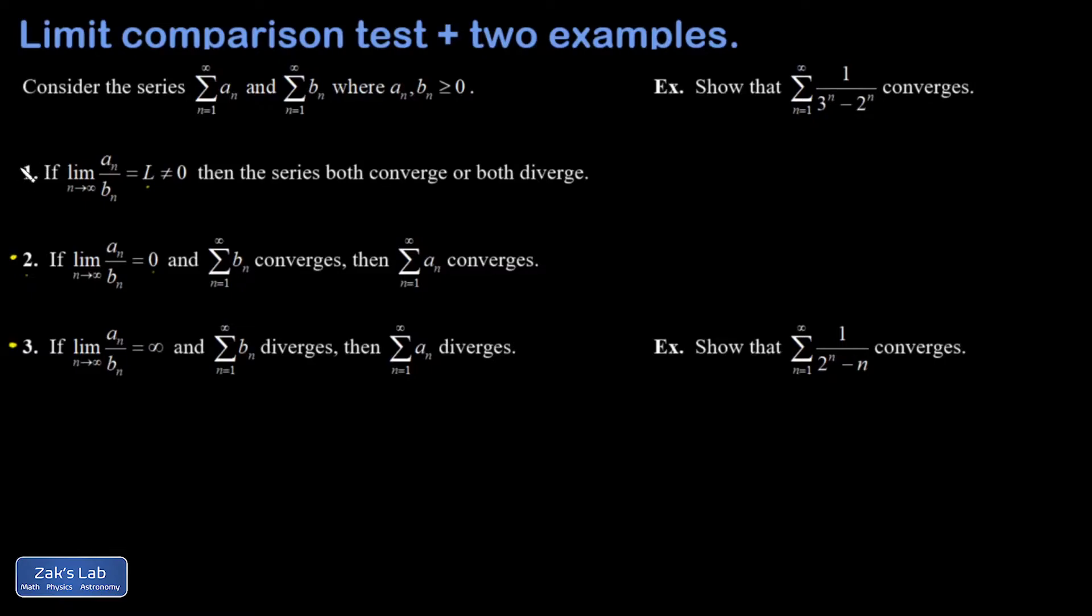By far the most typical way to use this test is number one, where I look at a ratio of the terms, look at the large n limit. If it settles down to a finite number, they both converge or both diverge. All right, let's apply this to a couple examples.